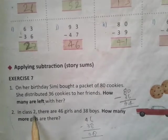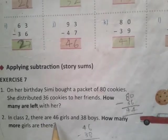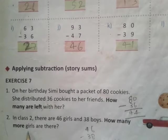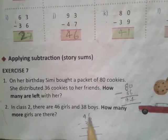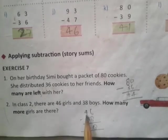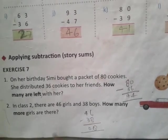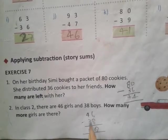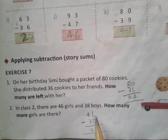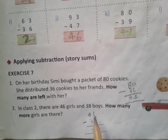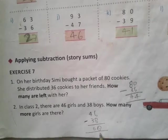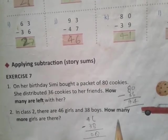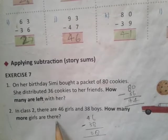Question 2. In class 2C, there are 46 girls and 38 boys. How many more girls are there? 46 subtract 38. 16 subtract 8 is 8, 3 subtract 3 is 0, equals 8. 8 more girls are there.